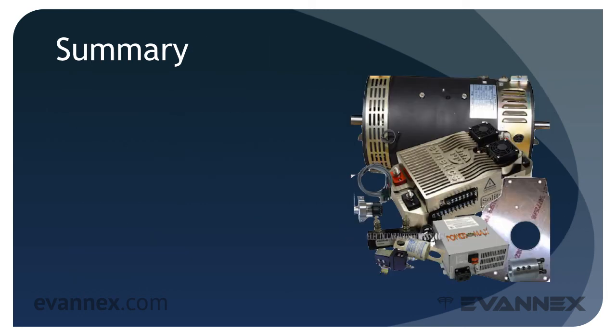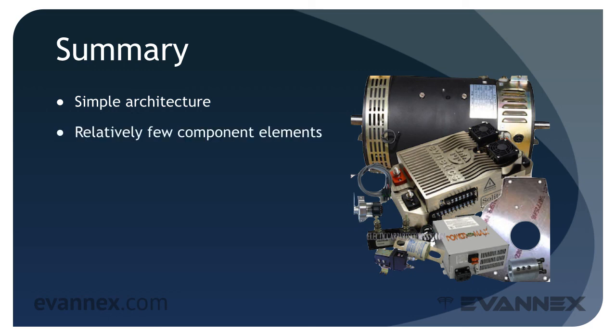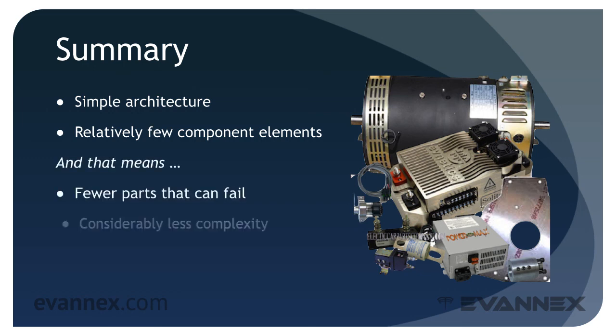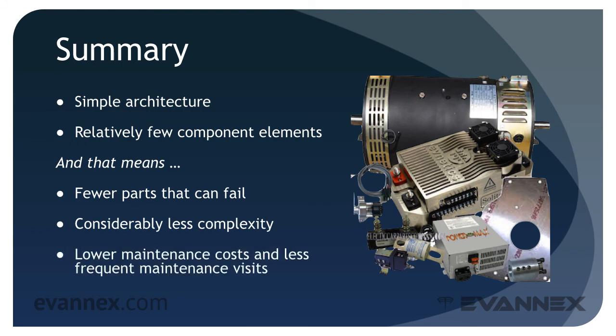Let's summarize. The basic EV architecture is a simple architecture in automotive terms. That's not to say that EVs don't deliver sophisticated tech — they do. But the component parts of an architecture are relatively simple in number, and that means fewer parts can fail. There's considerably less complexity, and because things don't fail, lower maintenance costs and less frequent maintenance visits.